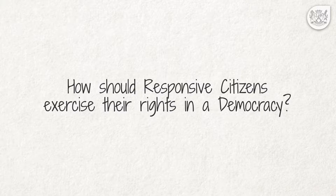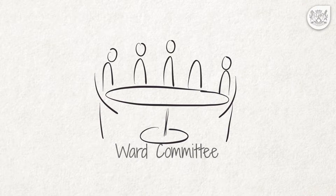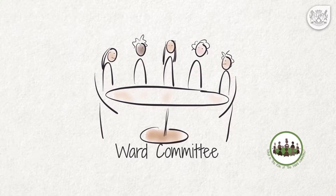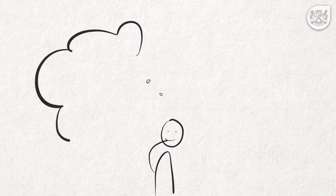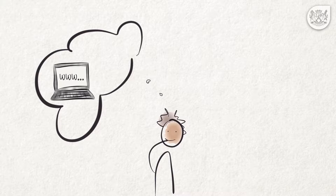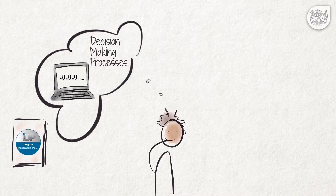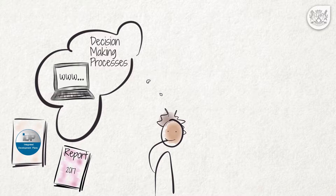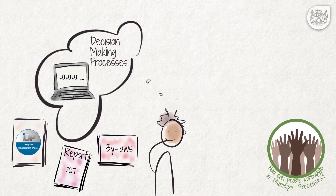How should responsive citizens exercise their rights in a democracy? A very important way for us to participate in municipal processes is through ward committees. We discuss ward committees in detail in the video 'What is the role of ward committees?' We can also inform ourselves through other means, for example through the website of our municipality, which should regularly update us about all the municipal decision-making processes we ought to participate in. These processes include the drafting of the municipality's integrated development plan, the municipal annual report and the drafting of bylaws, and are all explained in detail in the video 'How can people participate in municipal processes?'